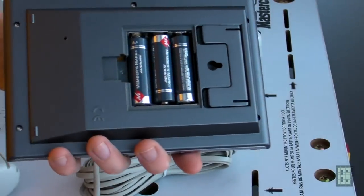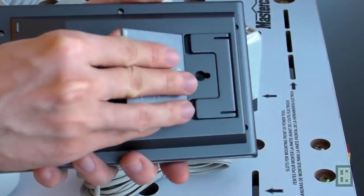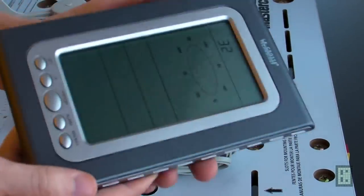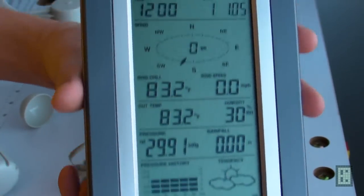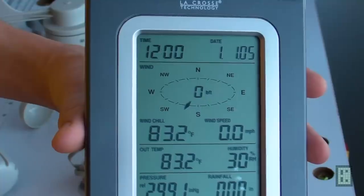The large receiver has three double A batteries, and as you can see, it has a large display with all the information.